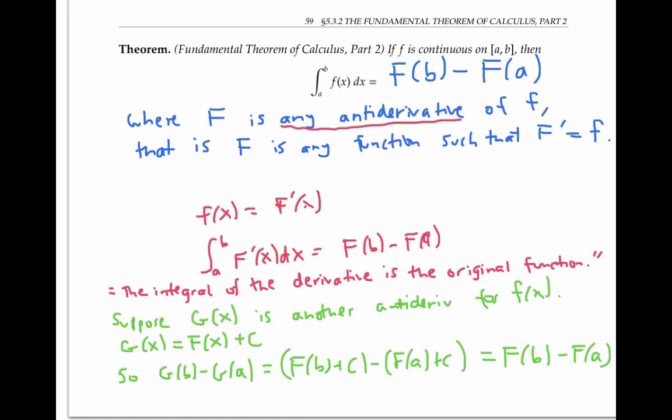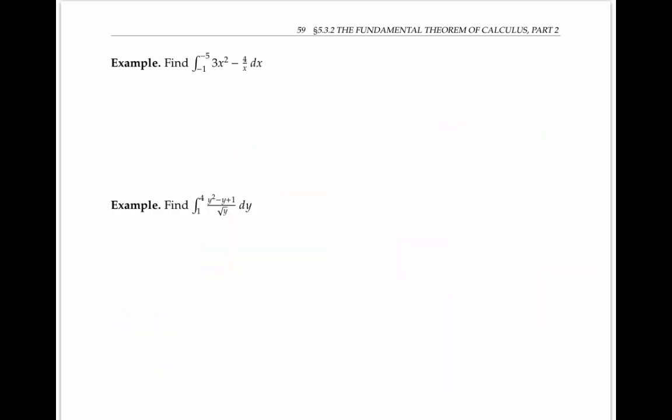Let's see how this works in some examples. In this first example, the antiderivative of 3x² is x³, and the antiderivative of -4/x is -4 ln|x|.